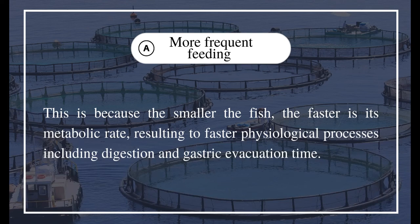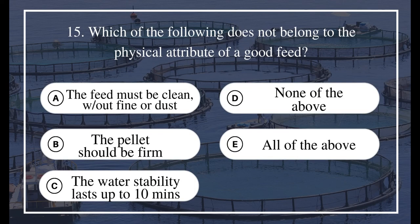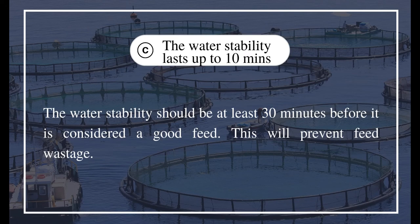Question 15: Which of the following does NOT belong to the physical attributes of a good feed? A) The feed must be clean without fines or dust, B) The pellet should be firm, C) The water stability lasts up to 10 minutes, D) None of the above, E) All of the above. The answer is C) The water stability lasts up to 10 minutes. The water stability should be at least 30 minutes before it is considered a good feed, to prevent feed wastage.